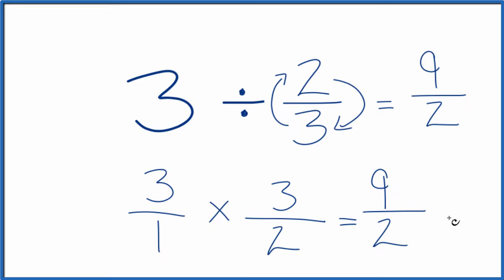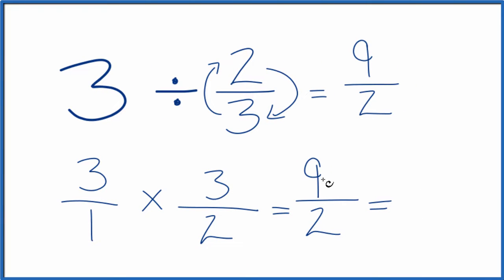This is an improper fraction. You could change it to a mixed fraction. 2 goes into 9, 2 times 4 is 8, with 1 left over. So you could also call 9 over 2, 4 and 1 half. We can check our work here.